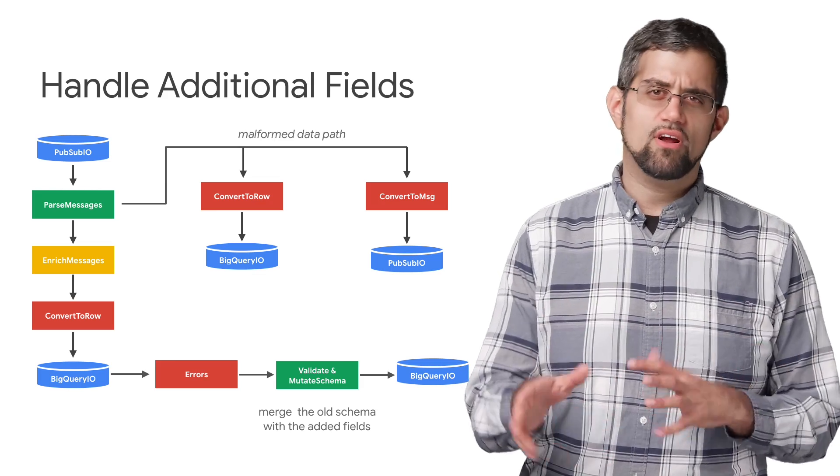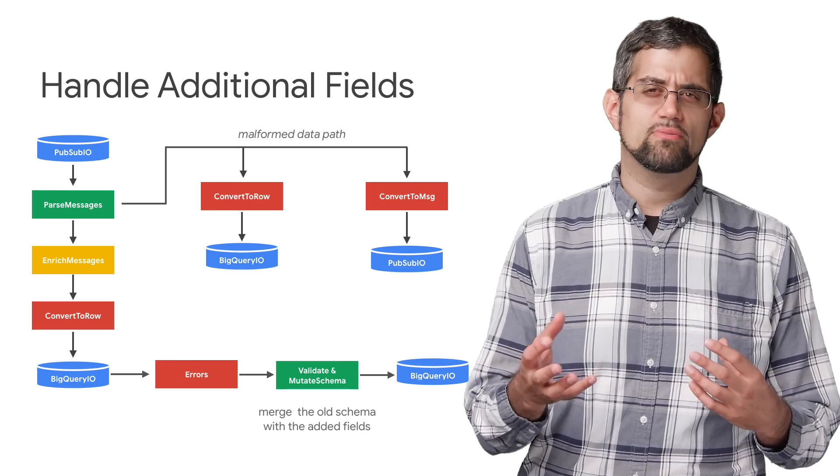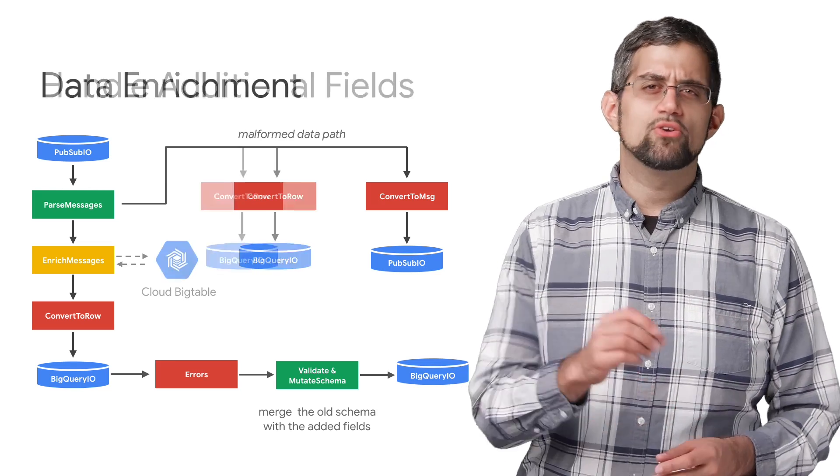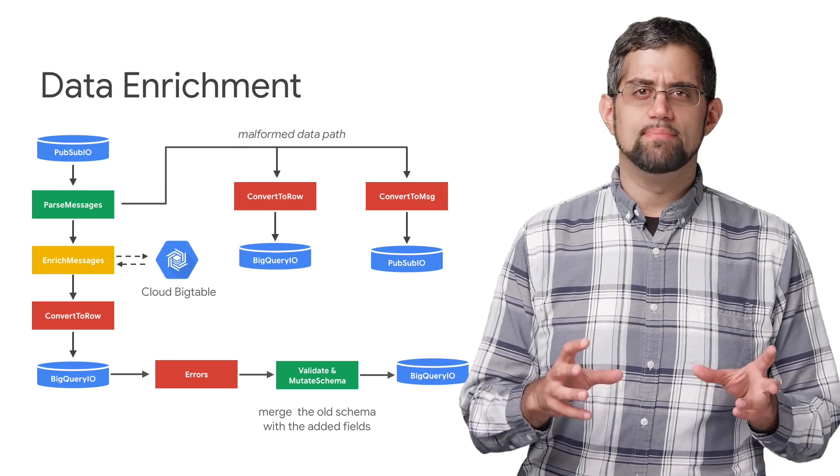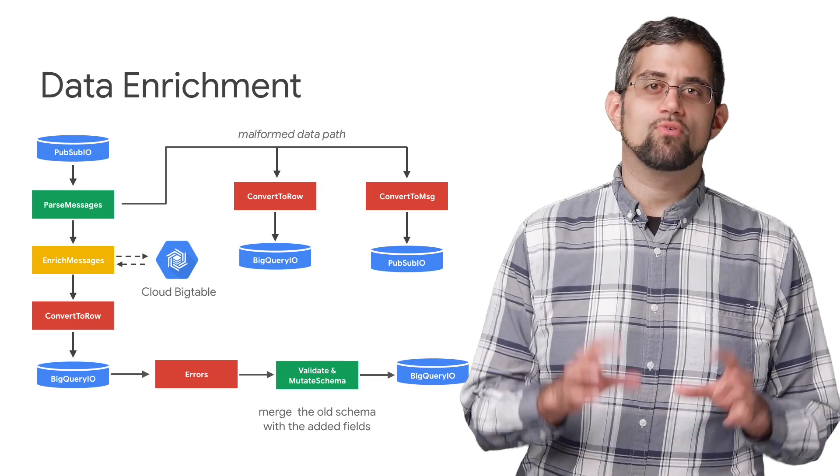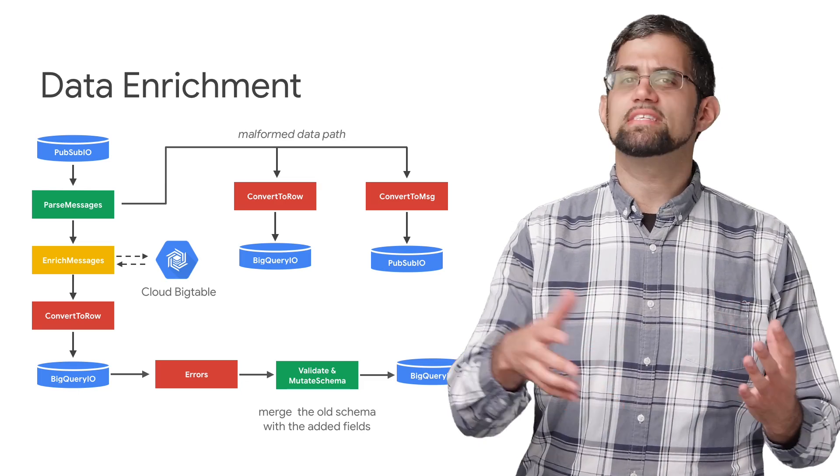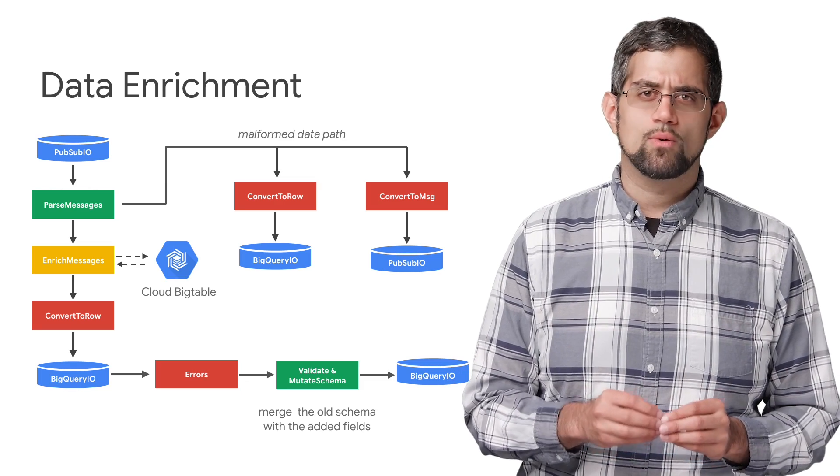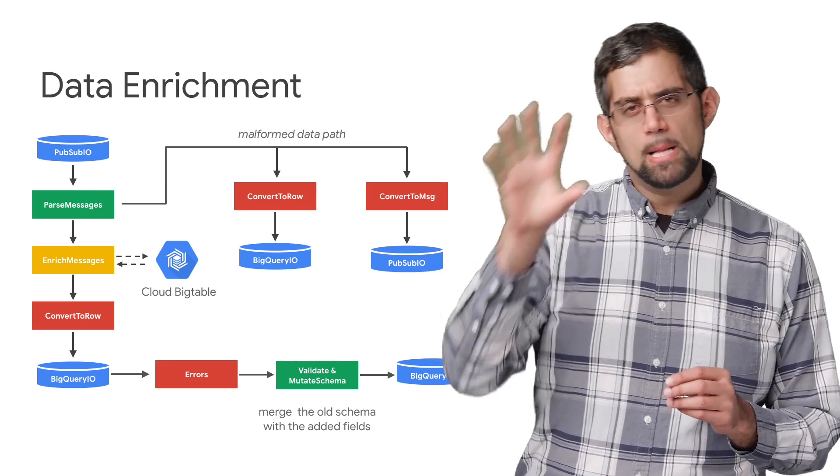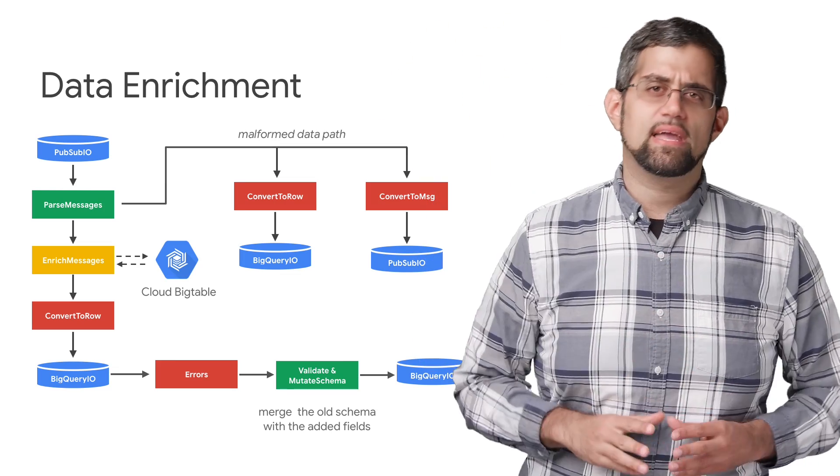Of course, with all of that data, there are other parts of our architecture that might have important information for our game events. In order to enrich our data with some real-time denormalization, we'll add a step for grabbing data from another source, such as Bigtable. During the Dataflow processing, we'll make a connection to Bigtable, pull out the information we need, and then add that back into our pipeline.